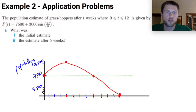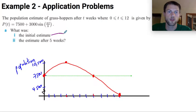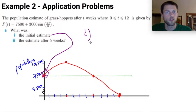What was the initial estimate and the estimate after five weeks? So the initial estimate is where t is equal to zero. So this piece is coming straight out of the y-intercept. The initial estimate is right here. So to answer A number one, the initial estimate is going to be 7,500 grasshoppers.